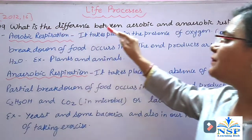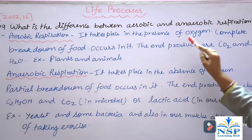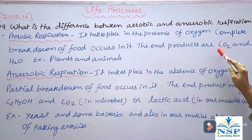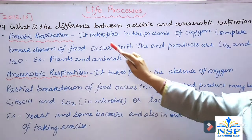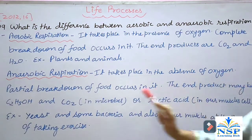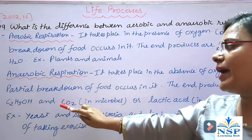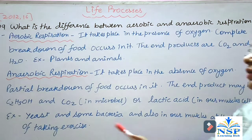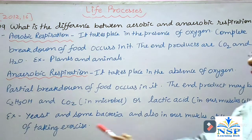Next question: What is the difference between aerobic and anaerobic respiration? Aerobic respiration takes place in the presence of oxygen. Complete breakdown of food occurs in it. The end products are carbon dioxide and water. For example, plants and animals undergo aerobic respiration. Anaerobic respiration takes place in the absence of oxygen. Partial breakdown of food occurs in it. The end products may be ethyl alcohol and carbon dioxide in microbes, or lactic acid in our muscle cells. For example, yeast, some bacteria, and also in our muscles during exercise.